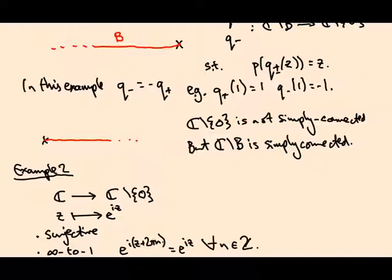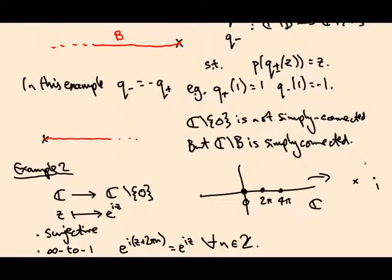There are infinitely many preimages that differ by a translation. Here is ℂ. So this point and this point at 2π, 4π, etc., all map to the same point in ℂ\{0}, which is namely one.